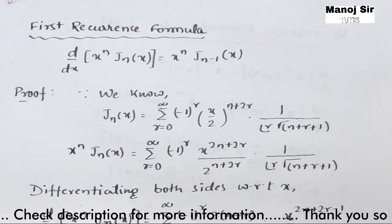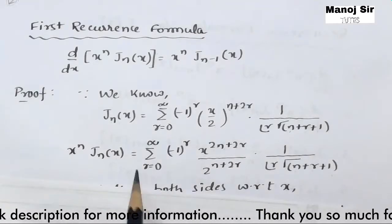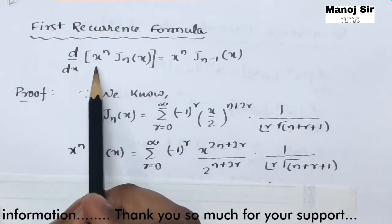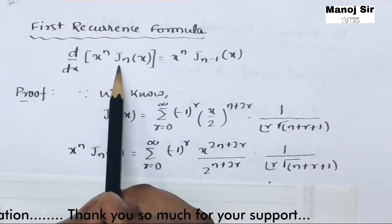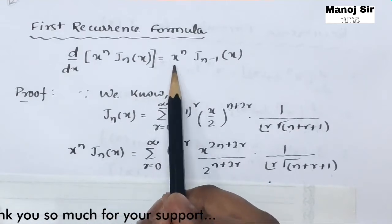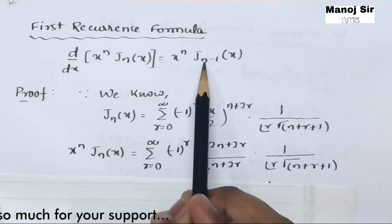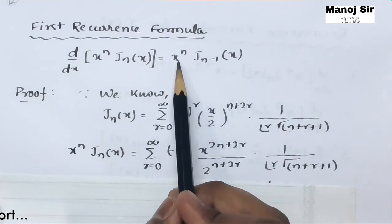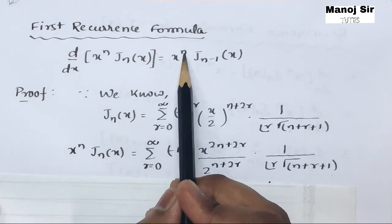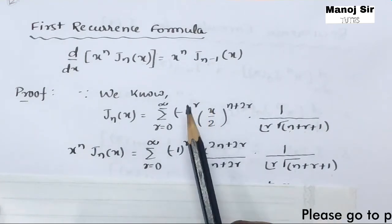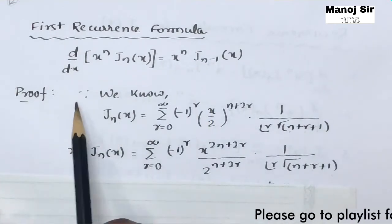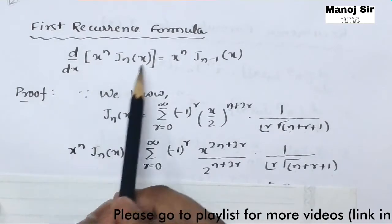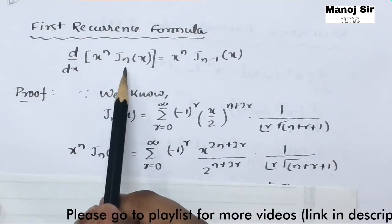The first recurrence formula states that d/dx of x^n times J_n(x) equals x^n times J_{n-1}(x).